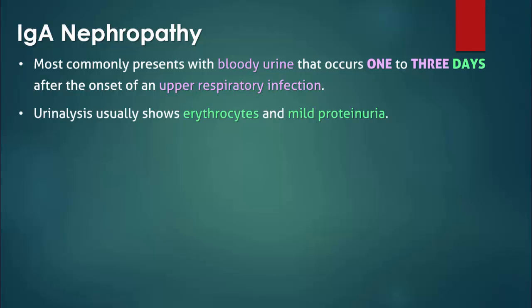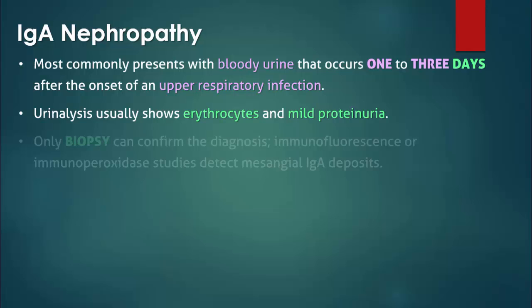Urinalysis usually shows red blood cells and mild proteinuria. Nephrotic range proteinuria also occurs in a minority of patients. As well, C3 levels are usually within normal limits, whereas they are lowered in post-streptococcal glomerulonephritis.